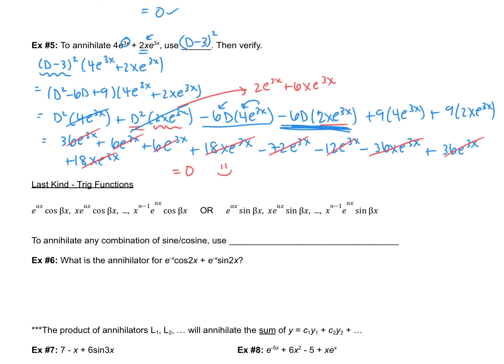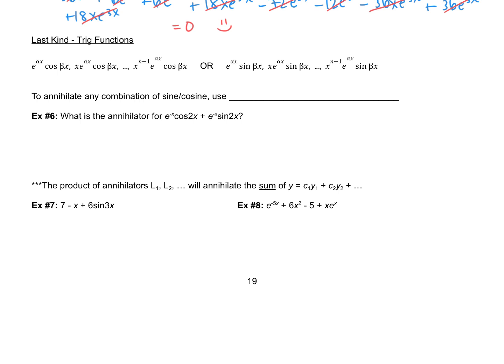We have one last kind of annihilator to discuss: trig functions. For combinations of sine and cosine involving e^(αx)·cos(βx) and e^(αx)·sin(βx), we use the operator (D² − 2αD + α² + β²)^n, where n is the number of times the root is repeated. An x in front indicates a repeated root.